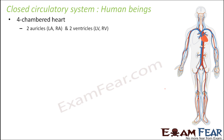The human heart controls the flow of blood and pumps it to various parts of the body. It is a four-chambered heart, meaning there are four chambers inside. These chambers are known as auricles and ventricles. There are two auricles — the left auricle and the right auricle — and two ventricles — the left ventricle and the right ventricle.